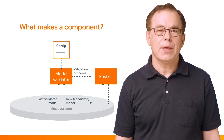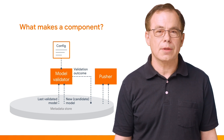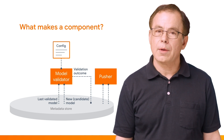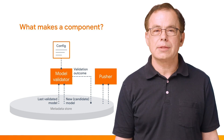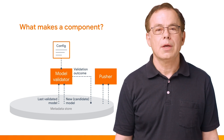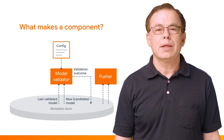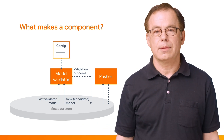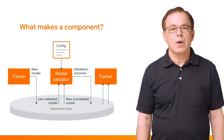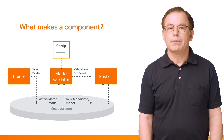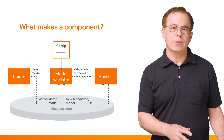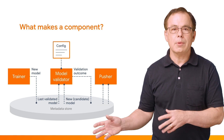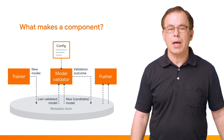We need some input for our component and a place to send our results — that's where the metadata store comes in. We'll talk more about the metadata store in our next episode. But for now, just be aware that for most components, the input will come from the metadata store, and the result will be written back to the metadata store. As our data moves through the pipeline, components will read metadata produced by an earlier component and write metadata that will be used by a component farther down the pipeline.